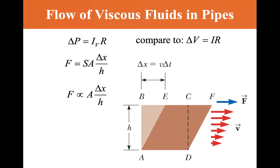And so force is proportional to the area times delta X over H. And since delta X is equal to V delta T, force is proportional to the area times the velocity divided by H. And we can come up with a viscosity constant, eta. That's the Greek letter eta, the small eta, the capital letter looks like an H.